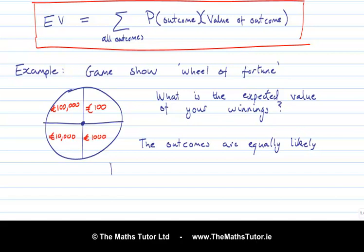So, in this case, we have that the probability of winning €100 is 1 over 4. The probability of winning €1,000 is also 1 over 4. The probability of winning €10,000 is 1 over 4. And the probability of winning €100,000 is 1 over 4. These are the four equally likely outcomes.